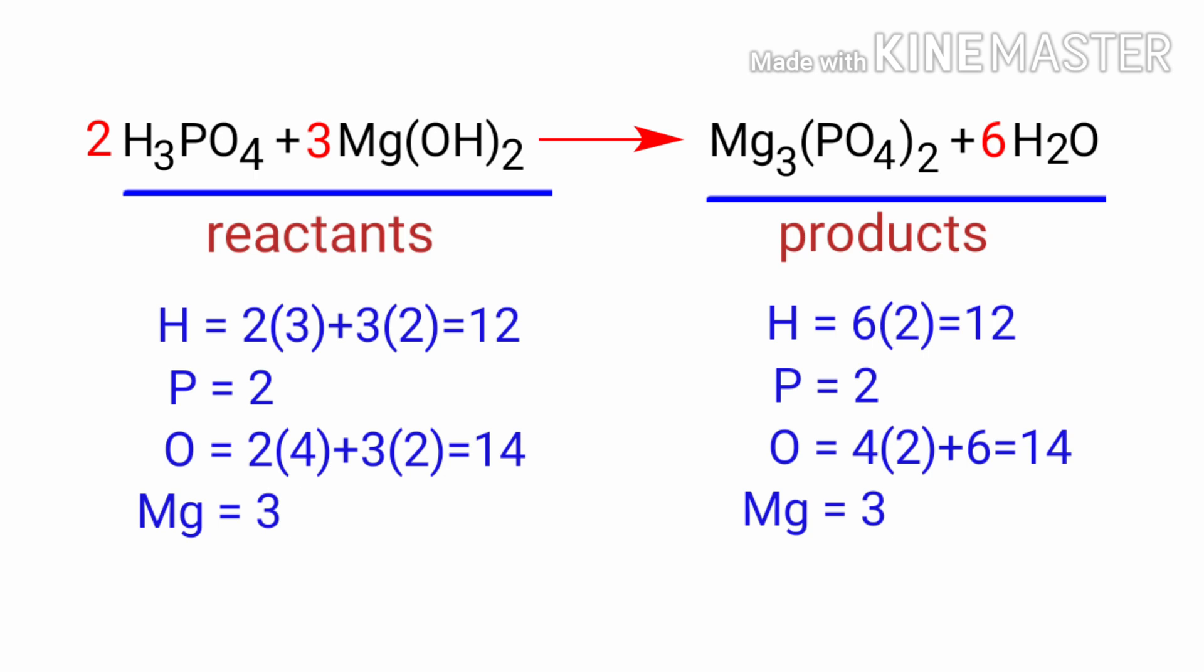There are 12 hydrogen atoms, 2 phosphorus atoms, 14 oxygen atoms, and 3 magnesium atoms on both sides.